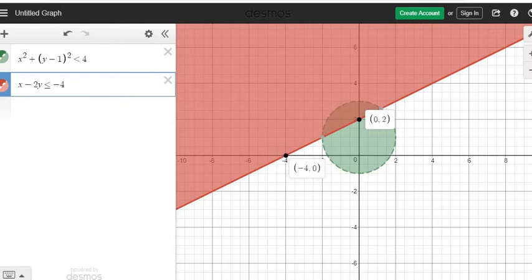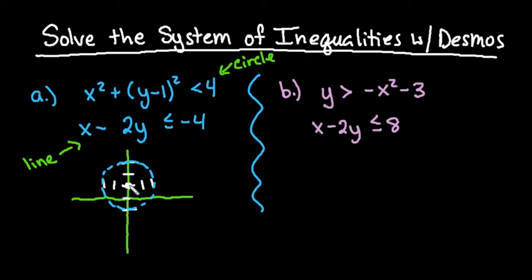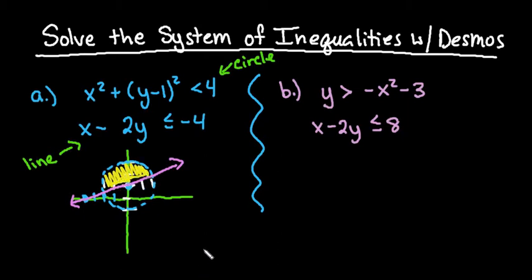The line goes through 0, 2 and negative 4, 0. So I'm just going to plot those two points: 0, 2 and negative 4, 0. This one would be a solid line because of the fact that it's included. Our answer region would just be this part right here that's contained by the circle and above the line — the overlap of the two shaded colors.